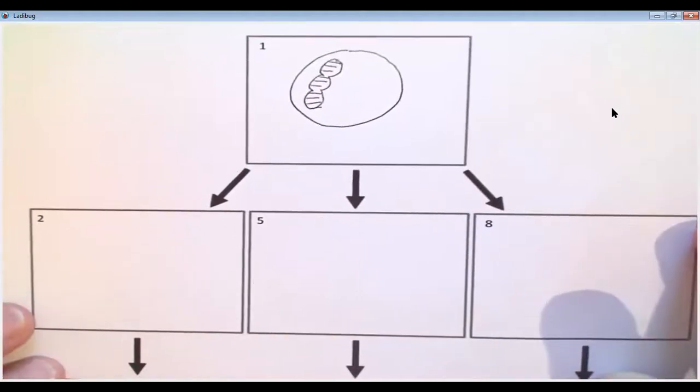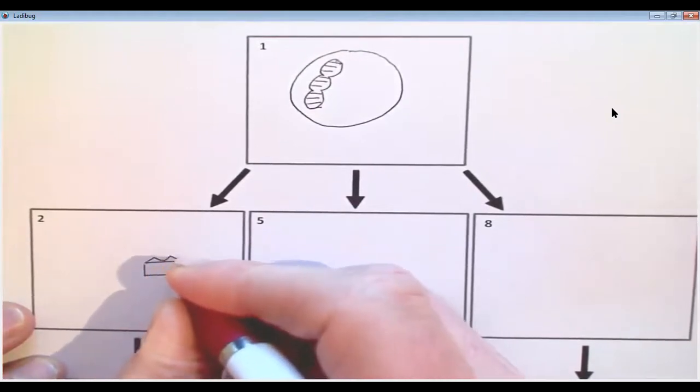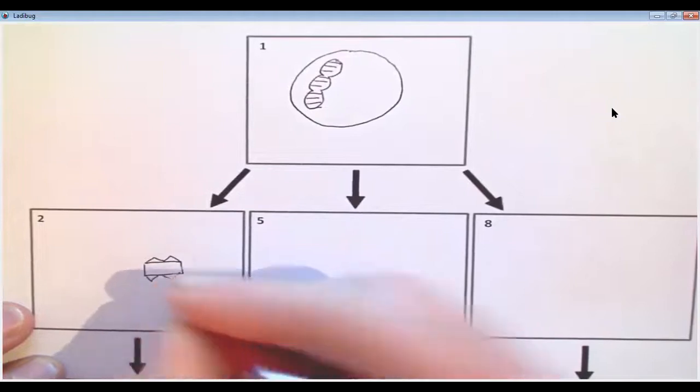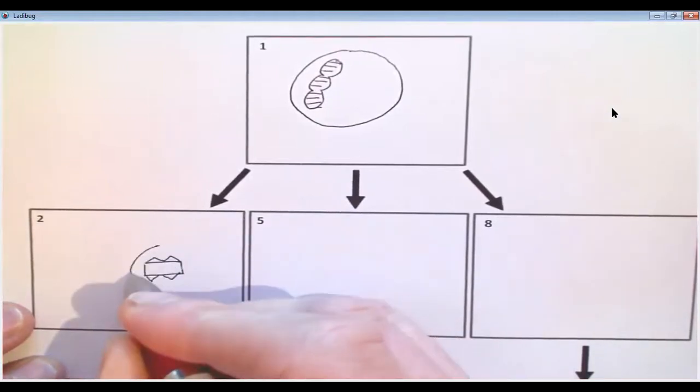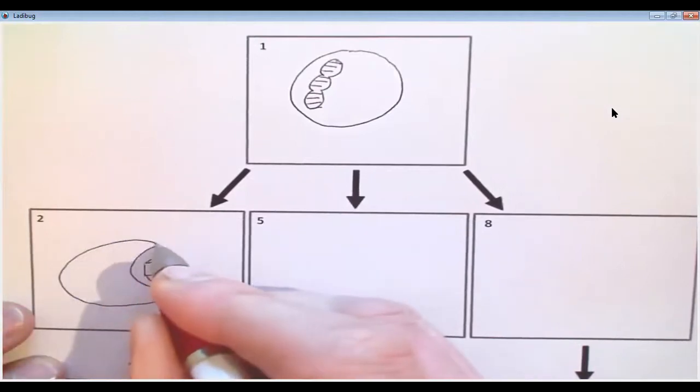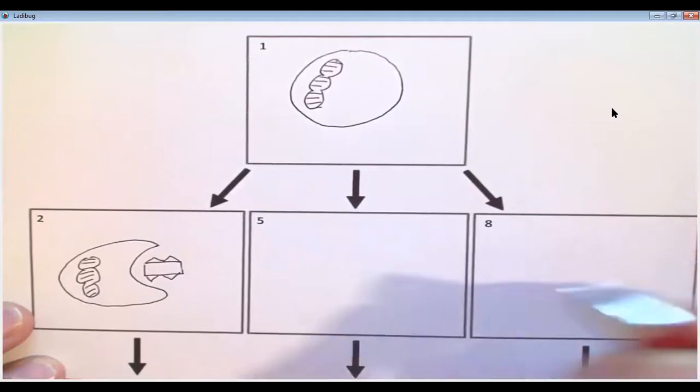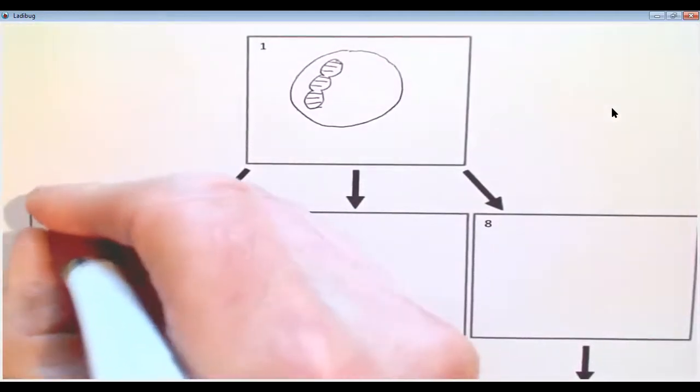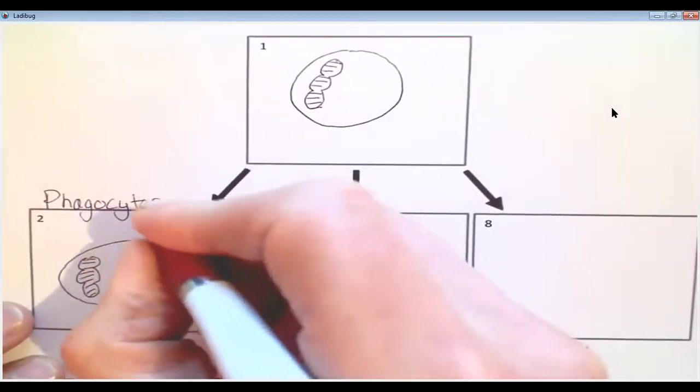The first thing it can do if it encounters a pathogen, which I'm going to draw in this box. So let's put the pathogen here. This pathogen and the antigens on the surface. The first thing it can do is this process. Which I'm hoping lots of you could tell me what that process is. That process is called phagocytosis.